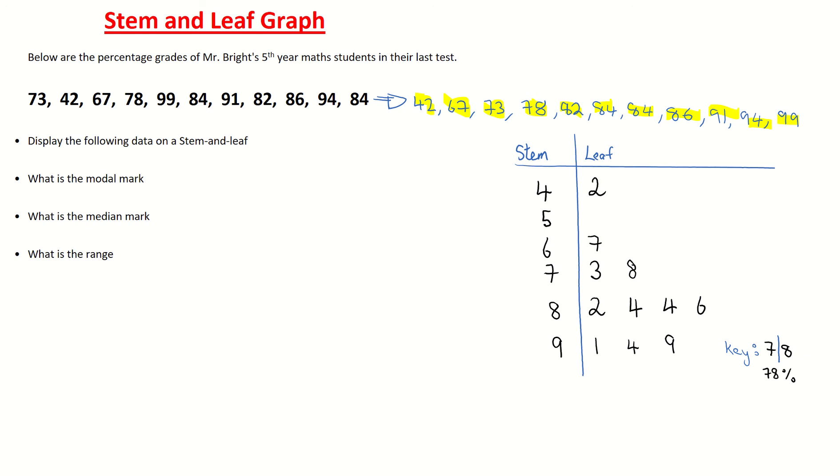And it's important that we put in that key. Because if someone looked at my stem and leaf and seen 7-8, that could mean 78 degrees, 78 smarties, 78 people. We don't know what it's talking about. So that's why it's important to put in the key to represent any number in your stem and leaf. I just happen to pick 78. You can pick 82, 99, 42, as long as you say what it stands for. And they all stand for a percentage in this question.